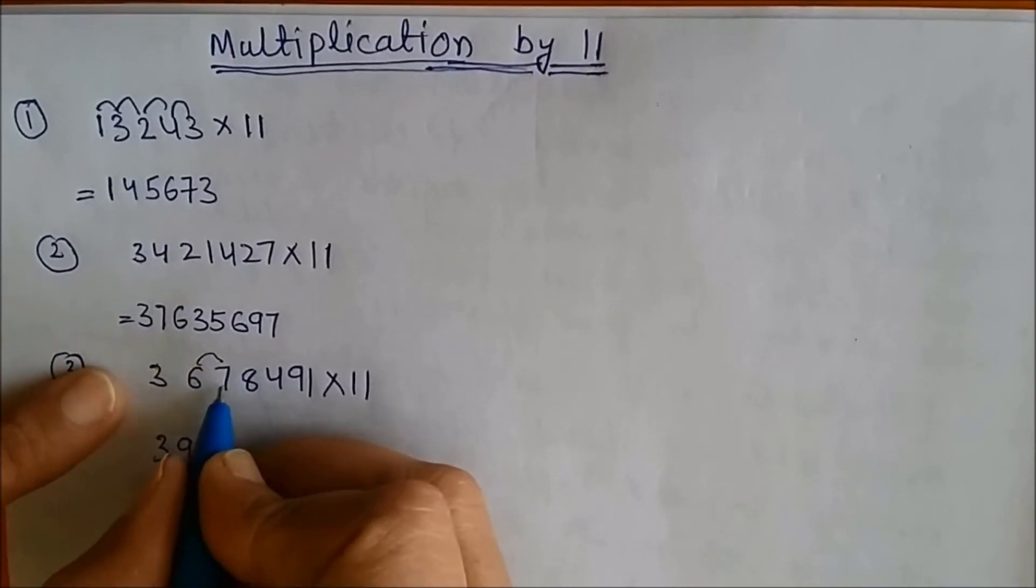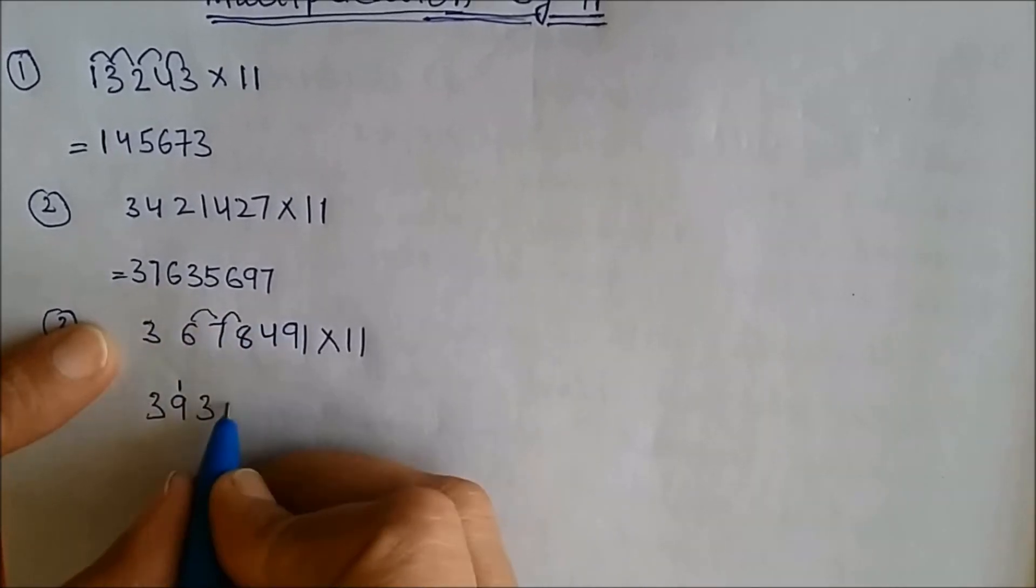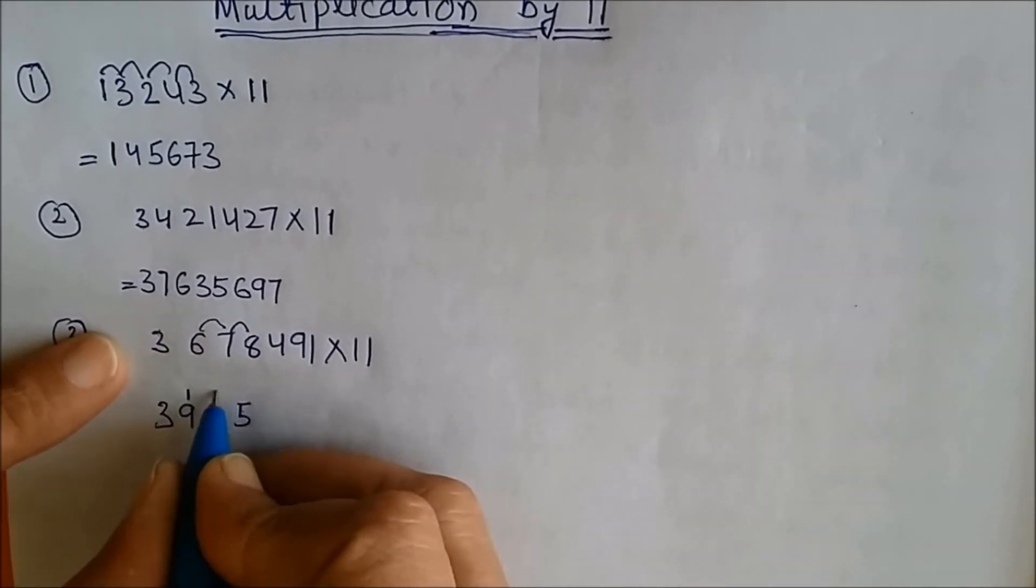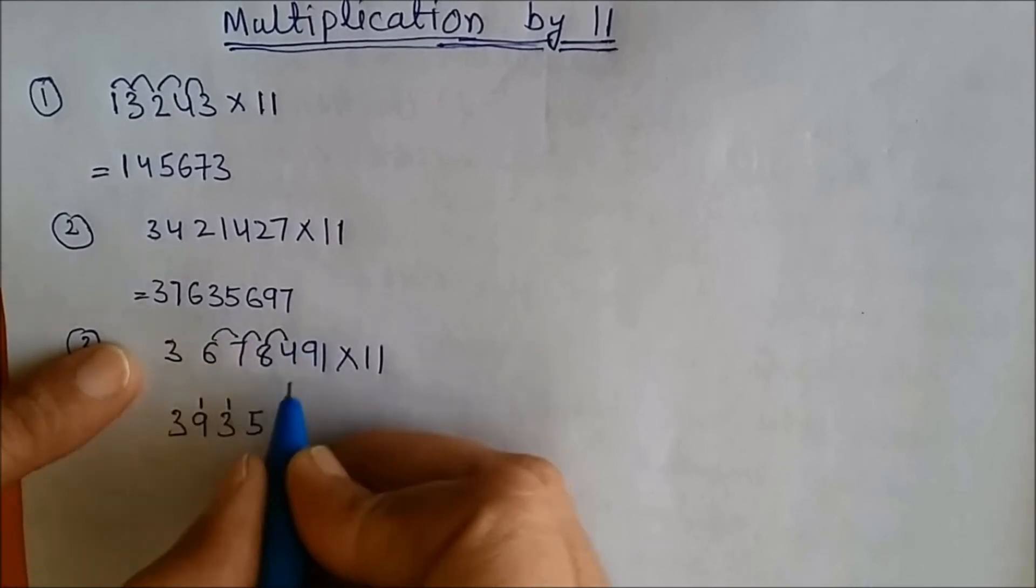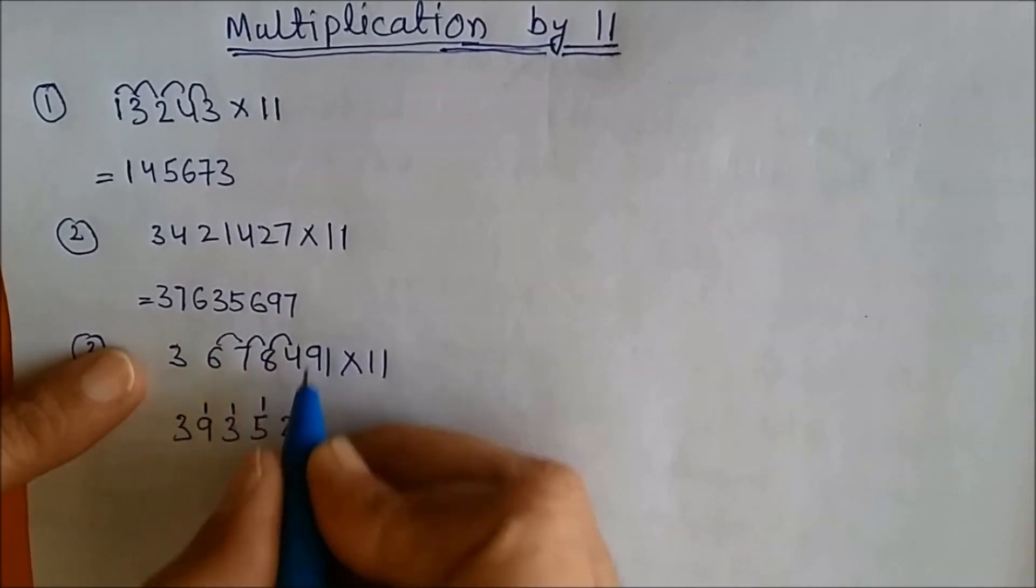Sum of these two: 13, so I will be writing 3 here, 1 on carry. Sum of these two: 15, so 5 here, 1 on carry. Sum of these two: 12, 2 here, 1 on carry. Sum of these two: 13, 3, 1 on carry.